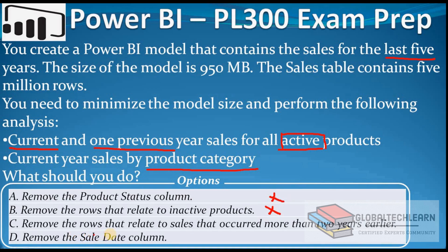The third option is remove the rows that relate to sales that occurred more than two years earlier. This means removing records older than two years. If we do that, we are not removing any column from the model — we will still have all columns including product status and product category. The given analyses both require only current and previous year data, so this option should work for us. The last option is remove the sales date column, which won't work because we need the sales date column to filter data for current year and previous year.